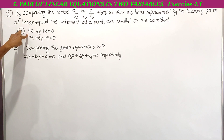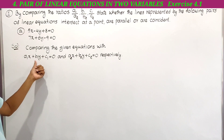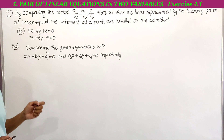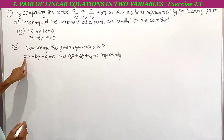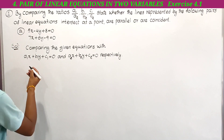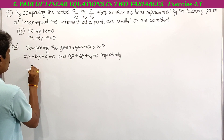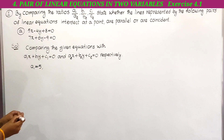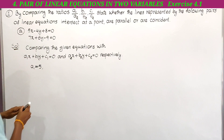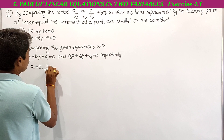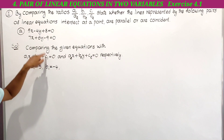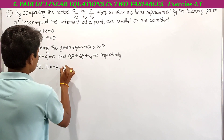This is the first equation. We have to compare this first equation with a1x plus b1y plus c1 equal to 0. So here a1 is the x coefficient. In the first equation the x coefficient is 5, so a1 is equal to 5. Here b1 is the y coefficient; here the y coefficient is minus 4, so b1 is equal to minus 4. Here c1 is the constant term; the constant is 8.